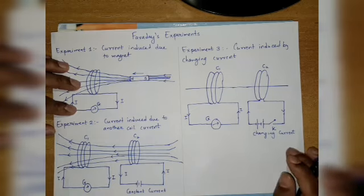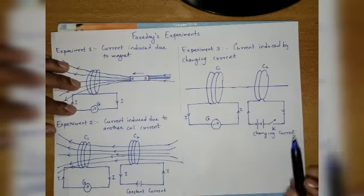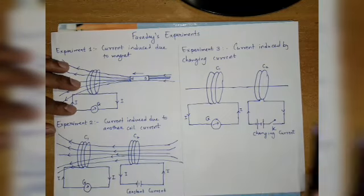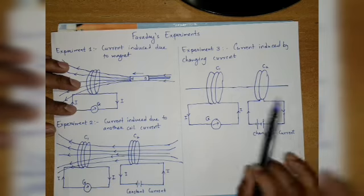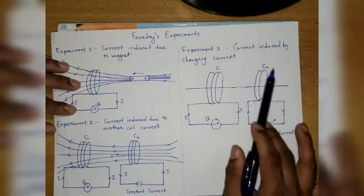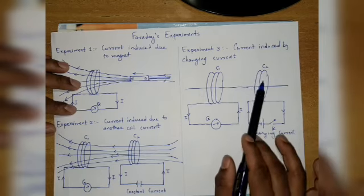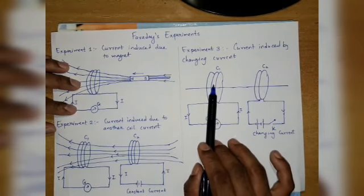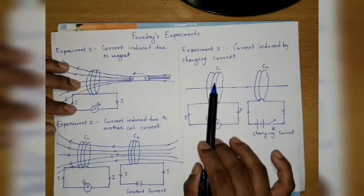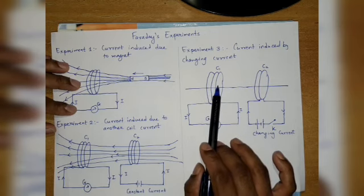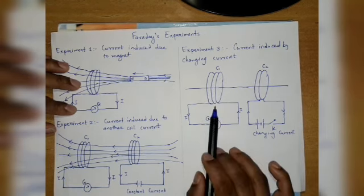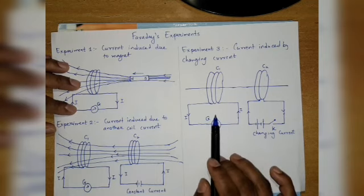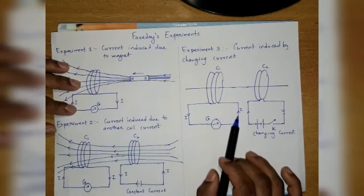However, if we repeatedly press the switch, the supply will repeatedly turn on-off in the circuit. Due to this, the magnetic field lines produced by C2 will pass through C1, and these magnetic field lines will keep changing. When magnetic field lines change, there is a change of magnetic flux. We know that whenever a change of magnetic flux happens, there is an induction of electric current.